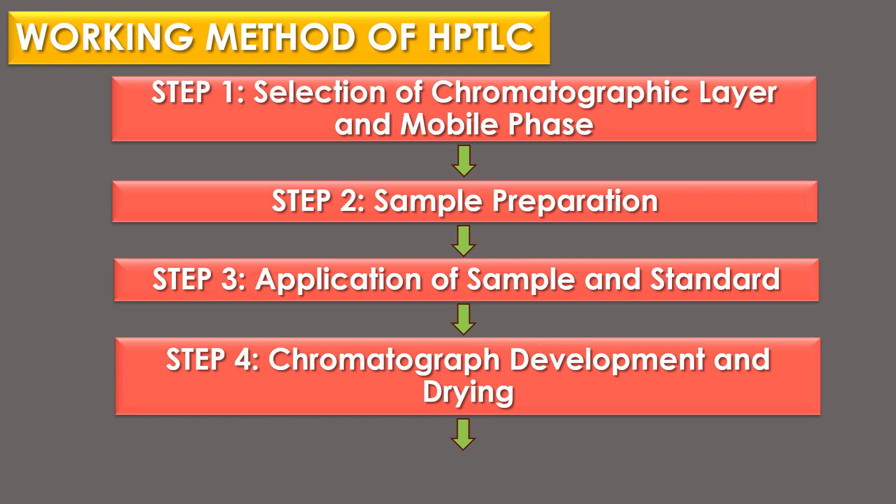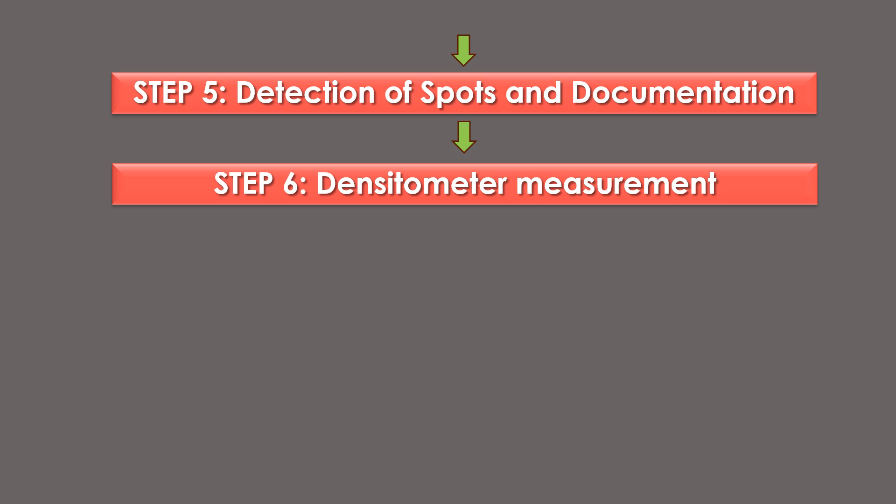The working method of HPTLC includes 6 steps. Step 1 is selection of chromatographic layer and mobile phase. Step 2 is sample preparation. Step 3 is application of sample and standard. Step 4 is chromatograph development and drying. Step 5 is detection of spots and documentation. And step 6 is densitometer measurement.